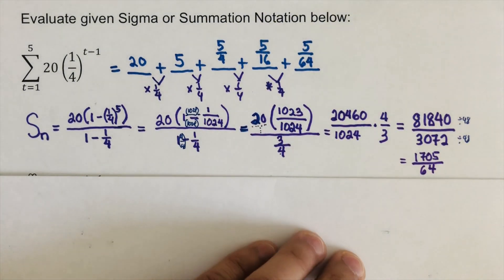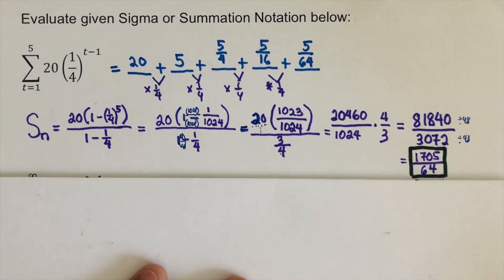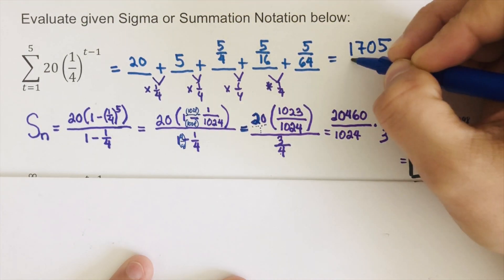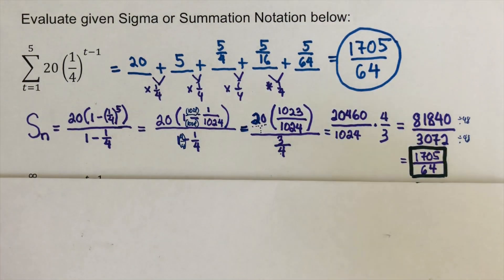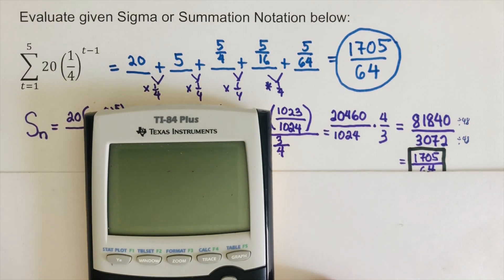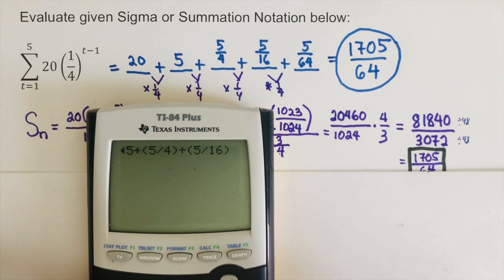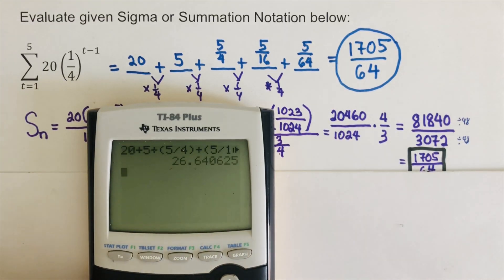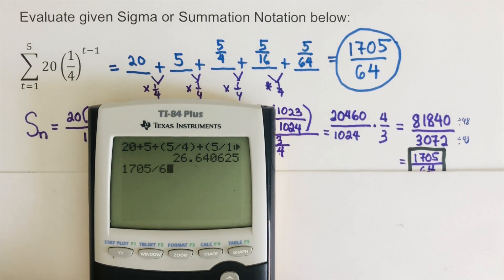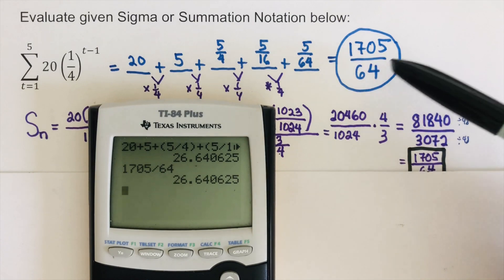So 1705/64 is our final answer. If we add all the terms — 20 + 5 + 5/4 + 5/16 + 5/64 — and divide 1705 by 64, the answer is a match. This is the decimal version and 1705/64 is the fraction version. Do the fraction version each time.